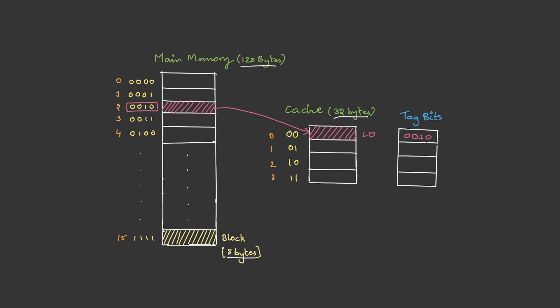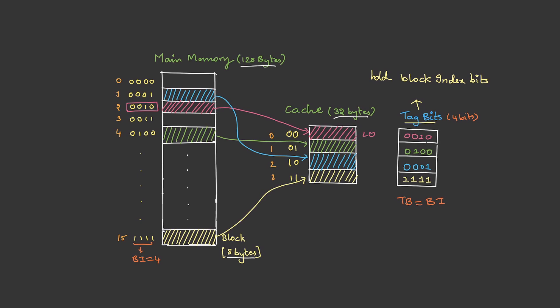So the tag bits hold the block index bits. The tag bit size is the same as the block index bits. Here we have the block index as 4, therefore the tag bit size is also 4 bits. For demonstration, let me fill the cache with a few blocks.